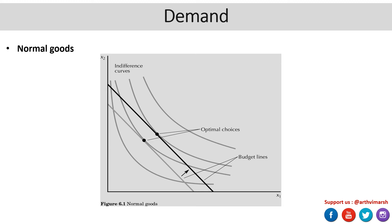Now let us understand this graphically for the case of a normal good. Consider the x1–x2 space where x1 and x2 are the two commodities, and you had an initial budget line AB with optimal point P. Now what happened is that the income of the consumer increased, and as a consequence, the optimal consumption bundle shifted from P to Q.